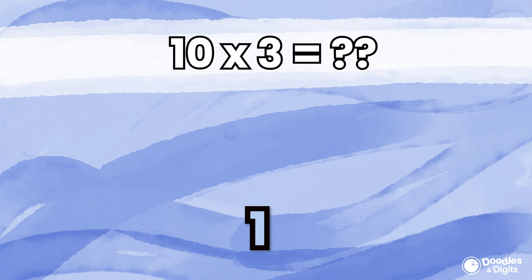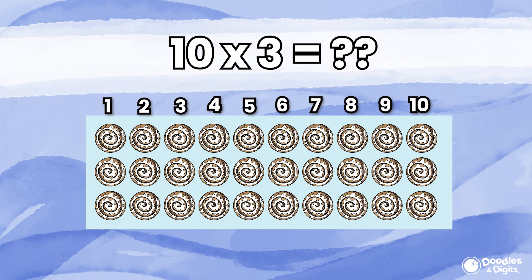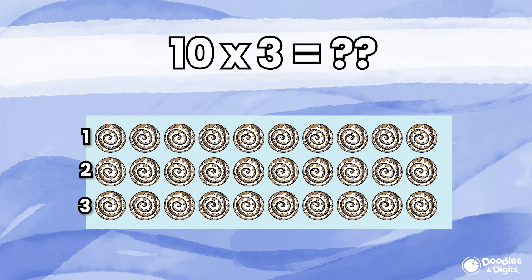Remember, it's okay if you need to erase and try again. I drew 10 columns of cinnamon rolls and 3 rows of cinnamon rolls. 10 times 3 equals 30.